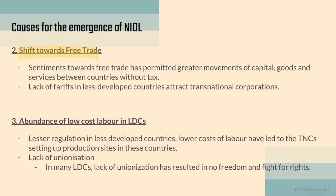The next cause is the shift towards free trade. Sentiments towards free trade have permitted greater movement of capital, goods, and services between countries without tax. Many less developed countries attract TNCs — transnational corporations — because with free trade, TNCs can relocate to areas with inherently less educated populations, where there is less pressure on wage rates, allowing them to exploit cheap labor and use low-skilled workers for production.